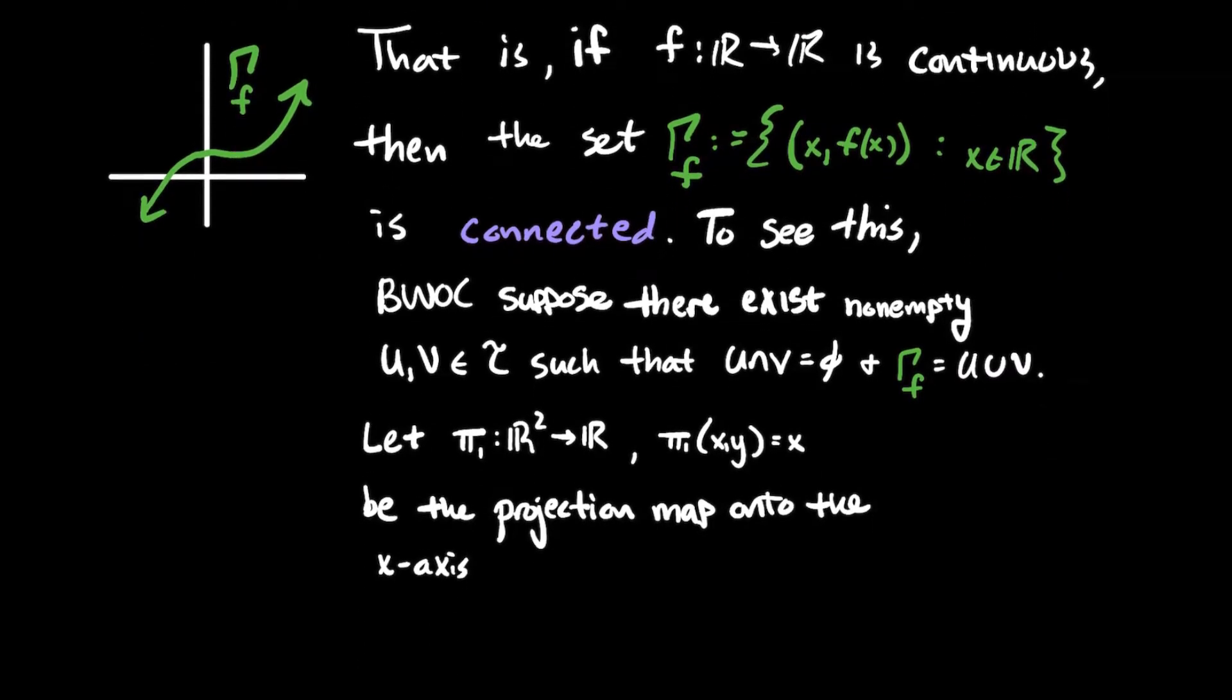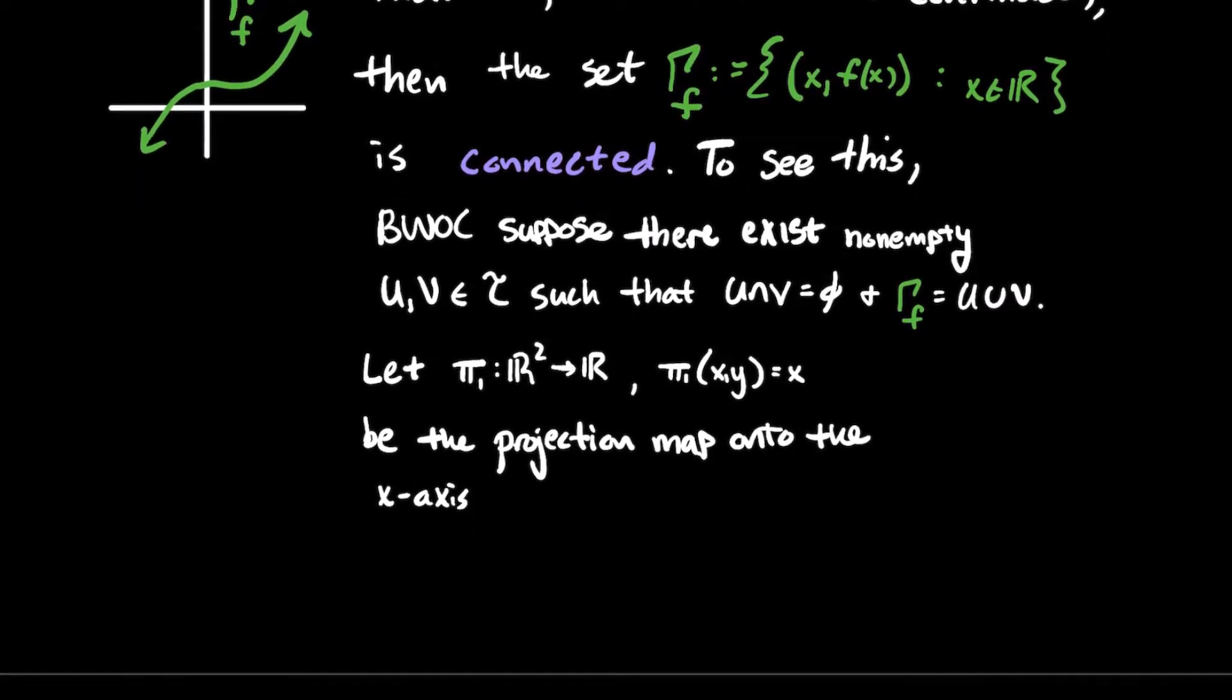So let's consider this special function π1 that goes from R^2 to R, and its definition is π1 is going to send a point to its x-coordinate. And we call that the projection map onto the x-axis. So here's a picture of what it does. You plug in an ordered pair, it just projects that onto whatever its x-coordinate is. So the output is down there on the x-axis.